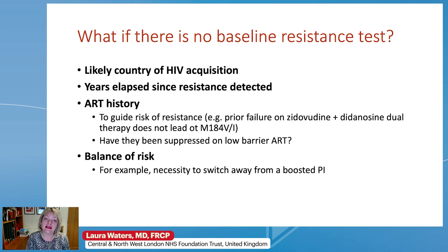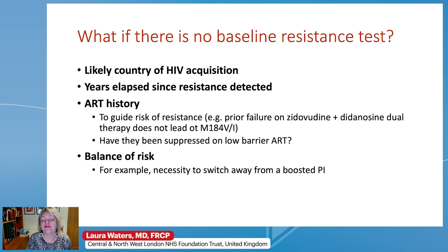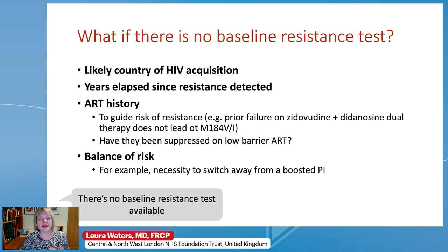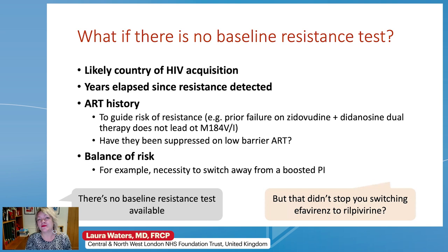If you see someone with no baseline resistance test, think about things like the likely country of acquisition, how many years since resistance was detected, what's their antiretroviral history, and what resistance is most likely at failure of any given regimen. Someone who's been suppressed for many years on low-barrier ART — it may be reasonable to assume they don't have major resistance. Also there's the balance of risk: if you need to switch away from a boosted PI for insurmountable drug interactions, that's clearly going to tip the balance in favour of switching. And we must remember there are some three-drug regimens with a lower barrier to resistance than some of our more recent two-drug options.